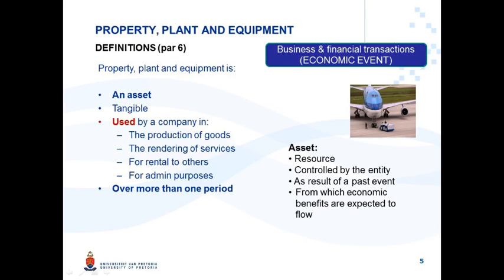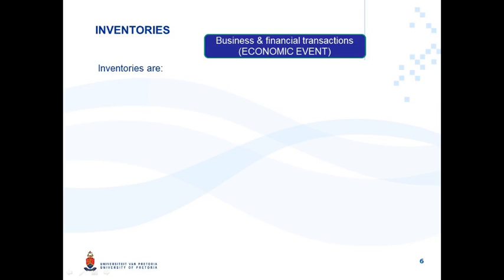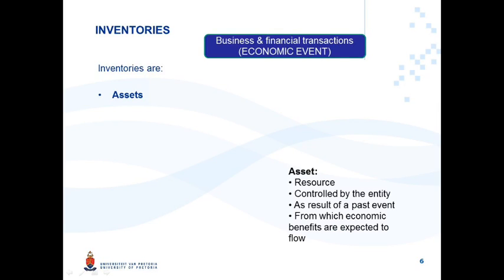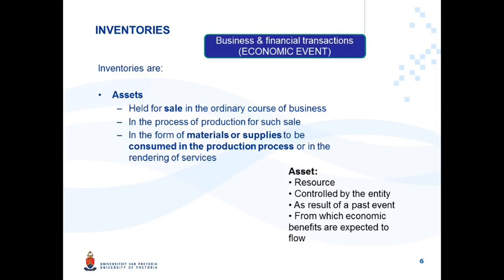Let's briefly recap the definition of inventories. Inventories are also assets, but they are held for sale in the ordinary course of business — like Boeing's airplane. They are in the process of production for such sale, or in the form of materials or supplies to be consumed in the production process or in the rendering of services. There are very specific differences between the definition of property, plant and equipment and the definition of inventories.